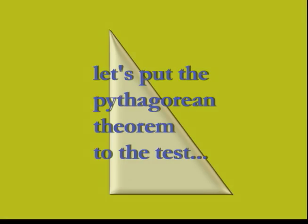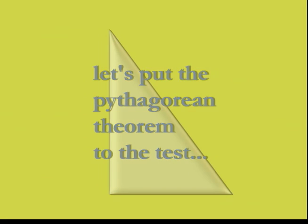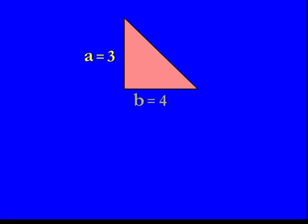Let's put the Pythagorean theorem to the test. Take this right triangle for example — it has sides of 3 and 4. Using the Pythagorean theorem, we should be able to determine the length of the third side, which is the hypotenuse, C.